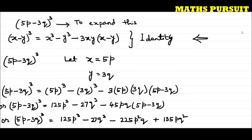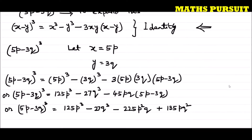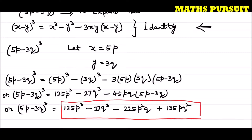So when we expanded (5p minus 3q) to the power 3, we got the answer: 125p to the power 3 minus 27q to the power 3 minus 225p squared q plus 135pq squared. Hope you understood this.